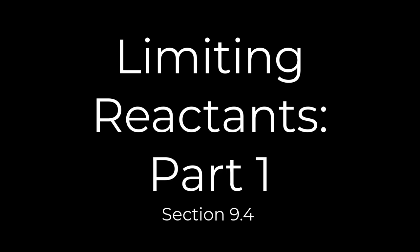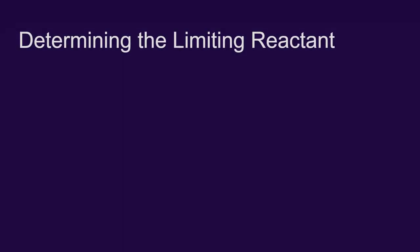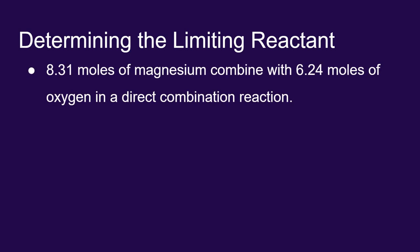I want to introduce the concept of a limiting reactant, and I think the easiest way to look into that is to just jump into an example. Let's consider what happens when I put 8.31 moles of magnesium and combine that with 6.24 moles of oxygen in a direct combination reaction.